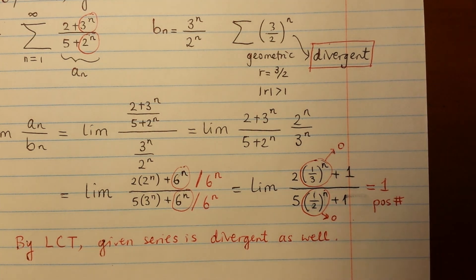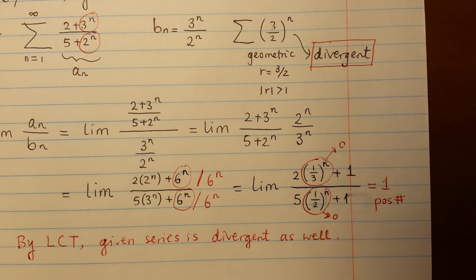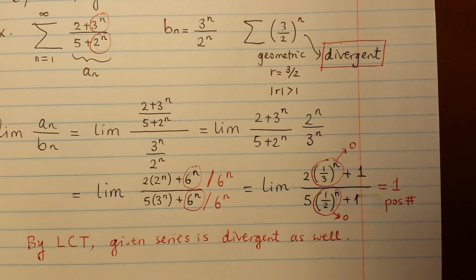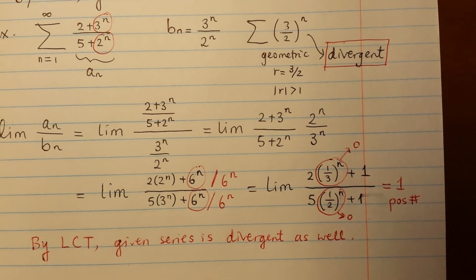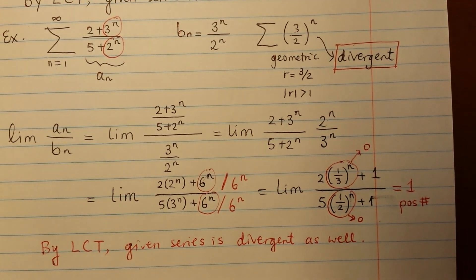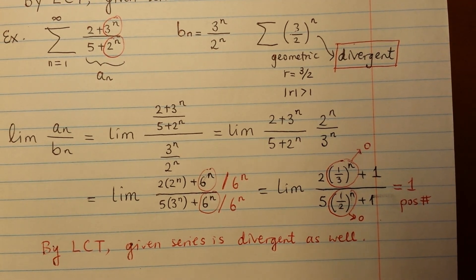So this is how we apply the limit comparison test. These are two good examples of different types, and I hope this is helpful for you. Thanks for watching. Bye.